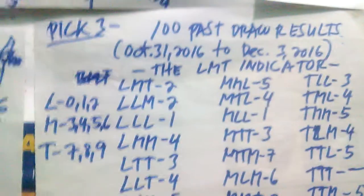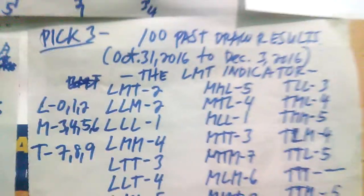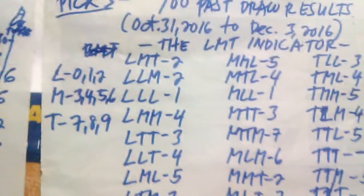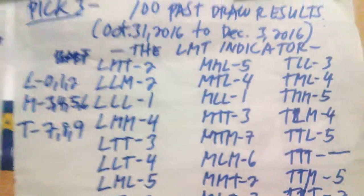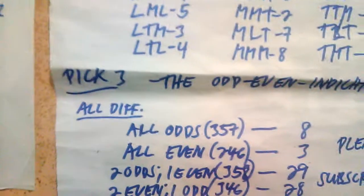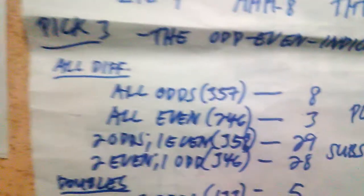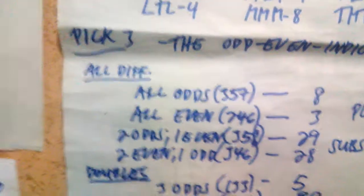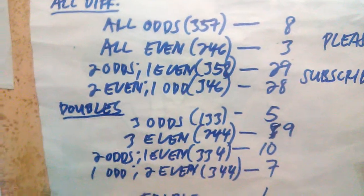Again, you have to retrieve all 100 past draw results in your area and tally them according to what you see on the monitor. The concrete example we have is from October 31, 2016 to December 3, 2016. Classify each combination according to the LMT indicator and the odd-even indicator and tally them just as shown on screen. This tally sheet will be used in future videos to make a credible prediction of future draw results.